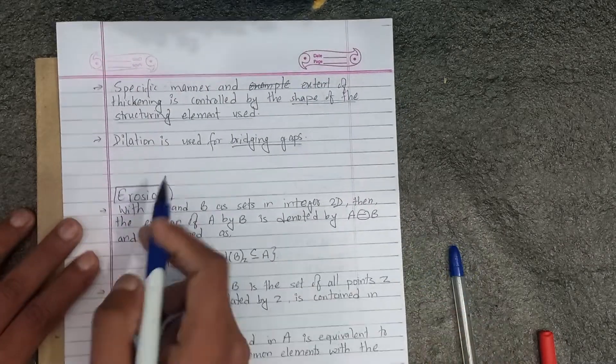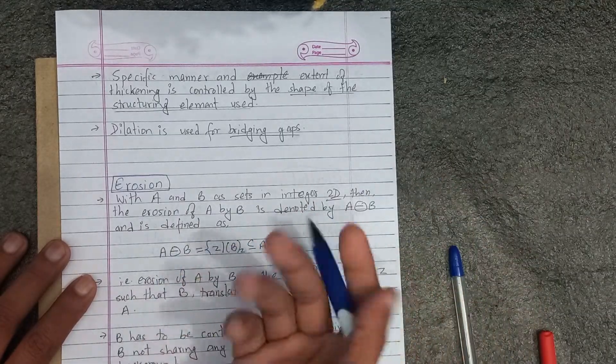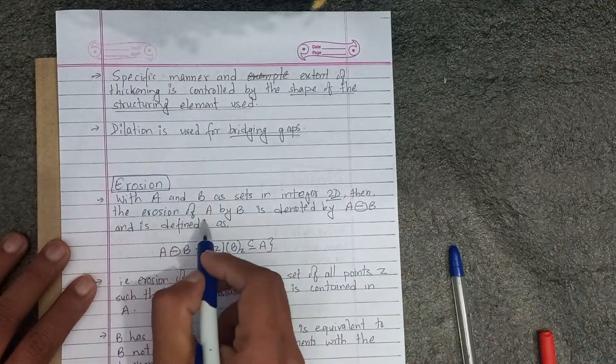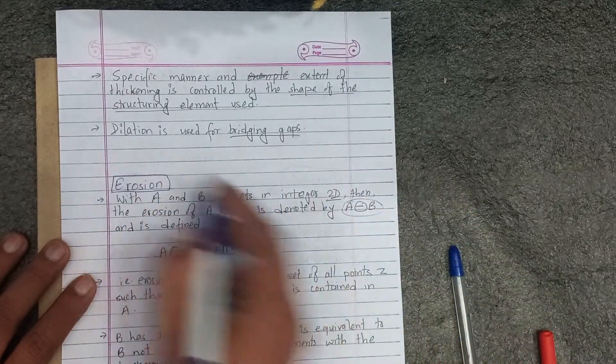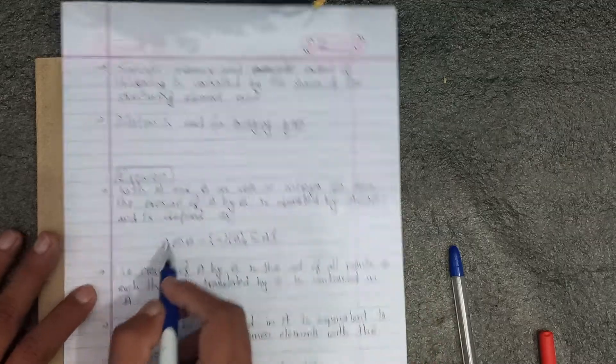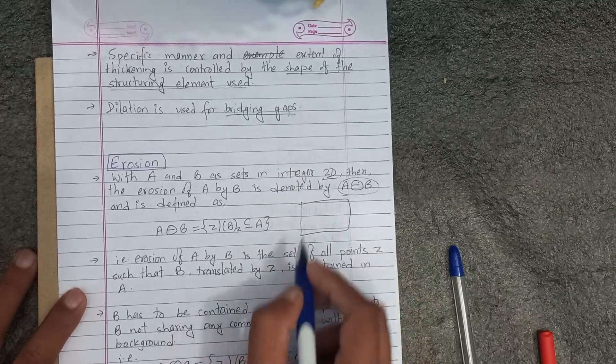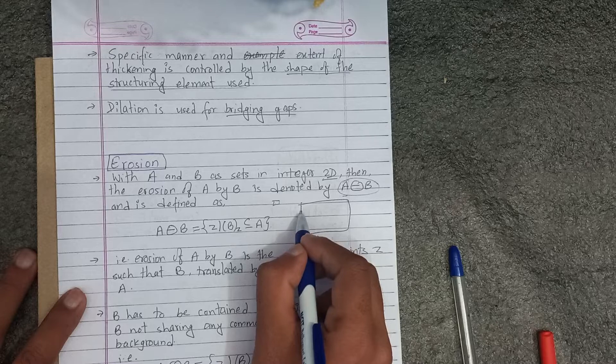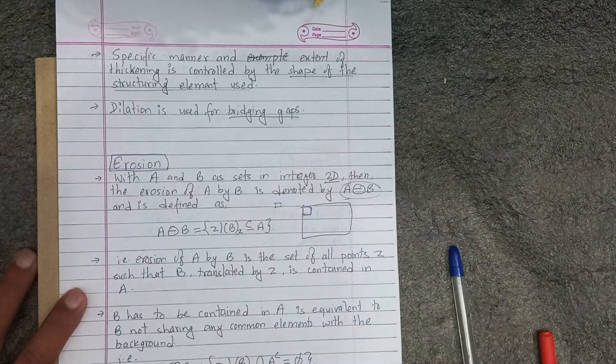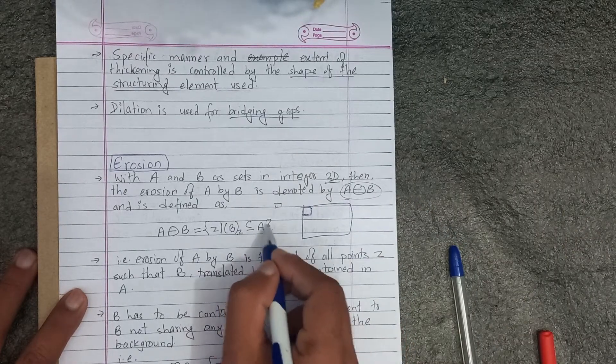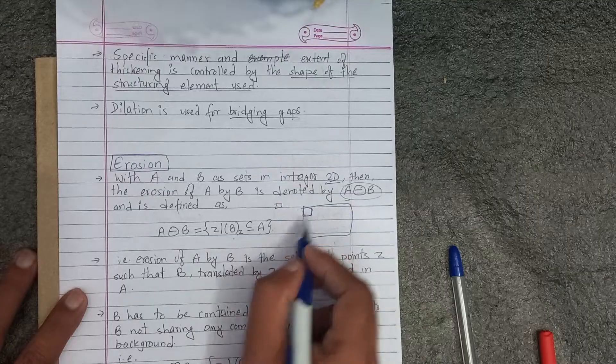Let's see about the erosion. What is the erosion? With A and B as a set in integer 2D, two dimensional, we are using the digital image. Then the erosion of A by B is denoted by this. What is the erosion? If we have a string, then we will denote the minus symbol in a circle. Define by, how does it work? We are using the structuring element. This should be the subset of A.